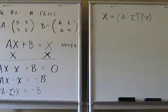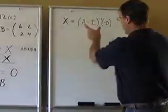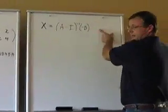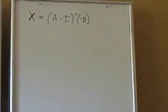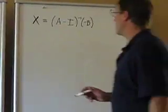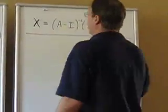So this is going to be A minus I inverse times negative B. That's the way it has to be. You can't have this on the other side. This is on the left. It must be on the left.